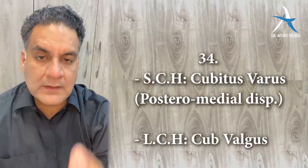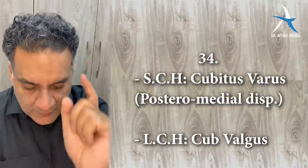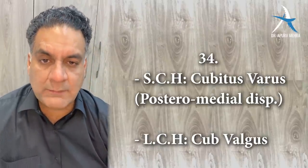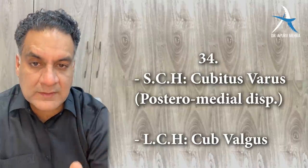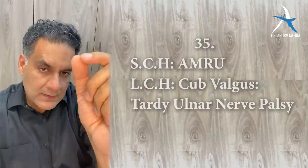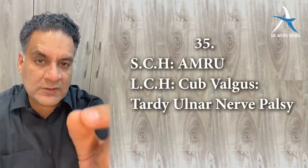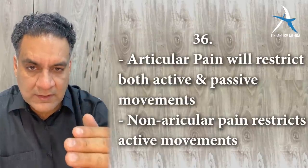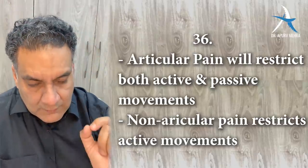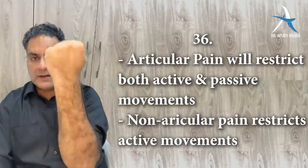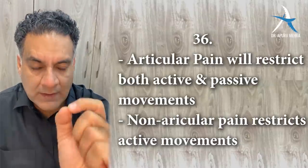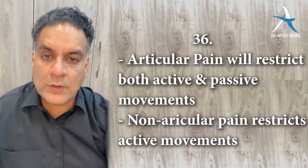Point number thirty-four: supracondylar fractures of the humerus cause cubitus varus because the displacement is posteromedial — called the extension type of injury. Lateral condyle humerus fractures cause cubitus valgus; the distal part goes laterally, stretching the ulnar nerve behind the medial epicondyle — called tardy ulnar nerve palsy. Remember: articular injuries restrict both active and passive movement, whereas non-articular injuries restrict only active movement.